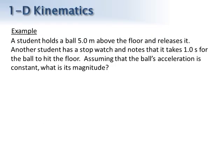Here's our problem: a student holds a ball five meters above the floor and releases it. Another student records that it takes 1.0 seconds for the ball to hit the floor. Assuming constant acceleration, what is the magnitude of the acceleration? Following the procedure, we first draw the diagram with the coordinate scheme, mark the initial and final spots, and add the variables. The displacement is negative five meters since it's moving opposite the positive y direction. The initial velocity is zero — the ball isn't moving initially, so that's implied in the problem.